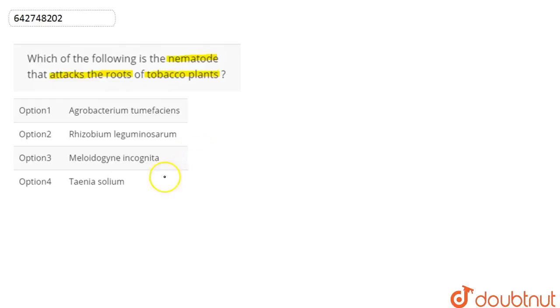Out of all four options, it is the Meloidogyne incognita that infects the roots of the tobacco plant that causes a great reduction in the yield.